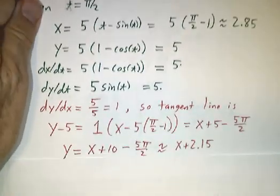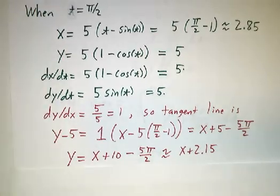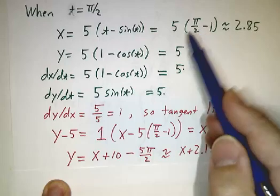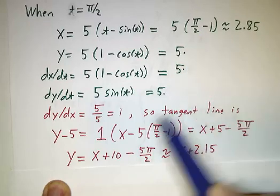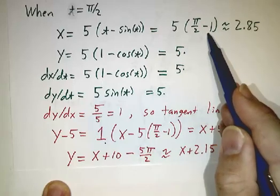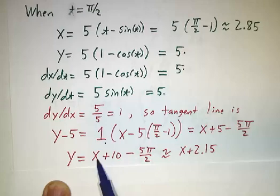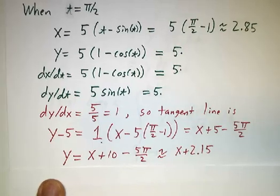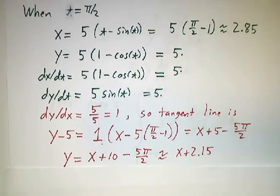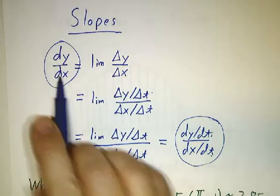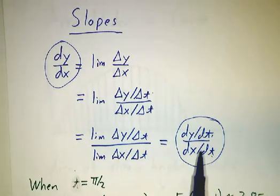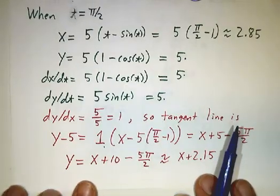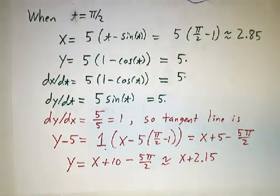And then all we have to do to get the equation of the tangent line, as we say, put it in point slope form. y minus 5 is equal to the slope times x minus 5 times π/2 minus 1. And then we do a tiny bit of algebra and we get that the equation is y equals x plus 10 minus 5π/2 or x plus roughly 2.15. So the main thing that's calculus here is finding the slope of the tangent line. That's given by the ratio of the derivatives. And then once you have the slope, find the equation of the tangent line. That's precalculus.